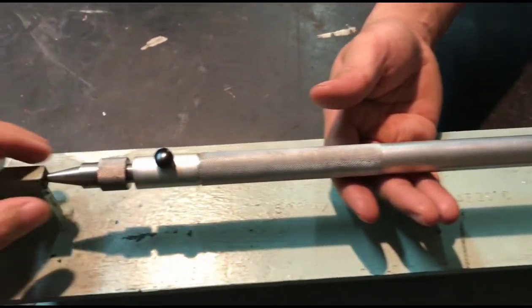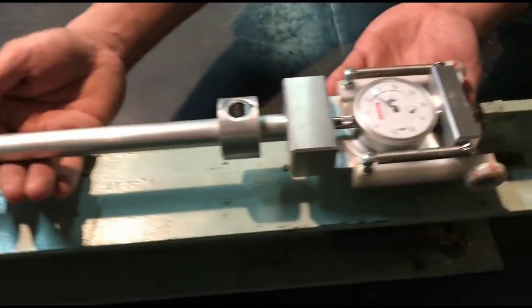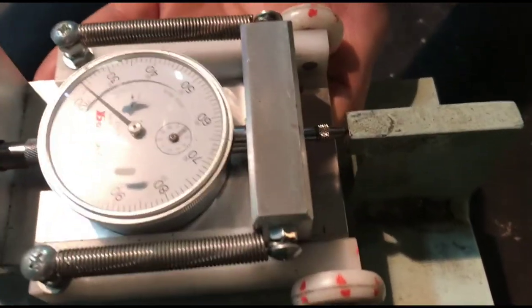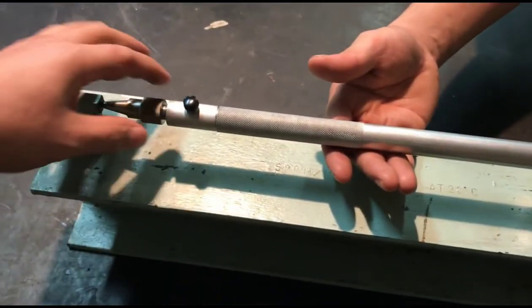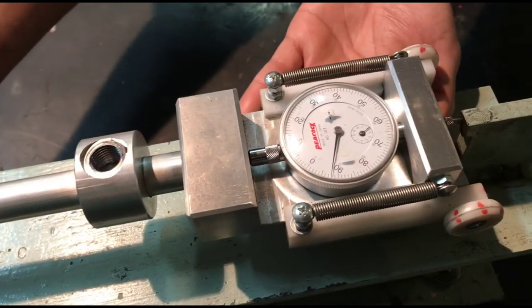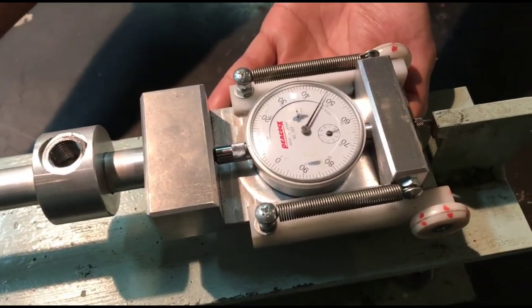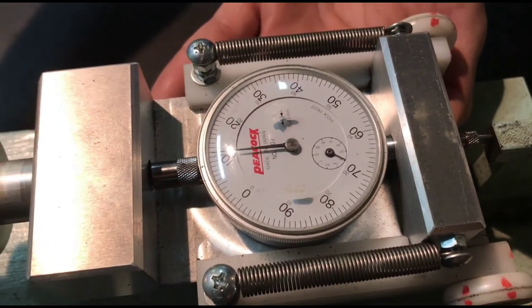Now we have to set the measuring tools to 503mm. We have to double check that this measuring tool is working properly - the small indicator and the big indicator are working properly during turning.